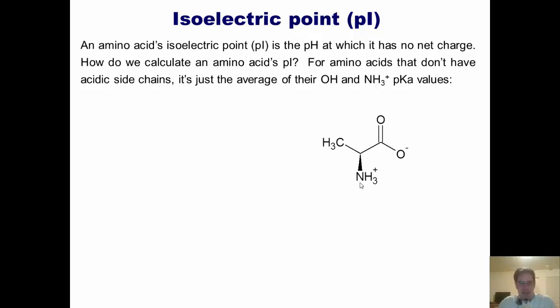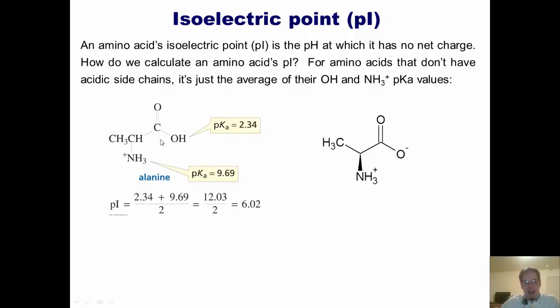So how do we calculate an amino acid's pI? For amino acids that don't have acidic or ionizable side chains, it's just the average of their OH and NH3+ pKa values. Let's take the example of alanine. You can see that alanine's pKa for the carboxylic acid OH is 2.34. The pKa of the amine group is 9.69. Because alanine does not have an ionizable side chain, the isoelectric point pI is just the average of these two pKa values.